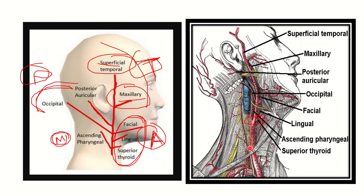In the second picture, related structures are also visible. Just after arising, the external carotid artery gives the superior thyroid artery going to the thyroid, then the ascending pharyngeal going medially, then the lingual artery going to the tongue, and the facial artery. The two terminal branches are the superficial temporal and the maxillary. Two branches go posterior to the ear: the posterior auricular and the occipital artery.